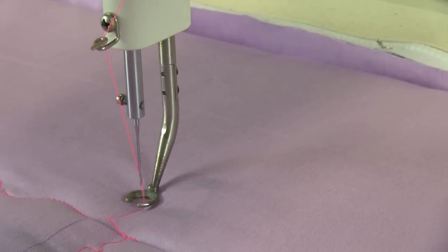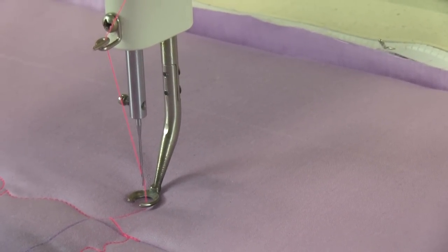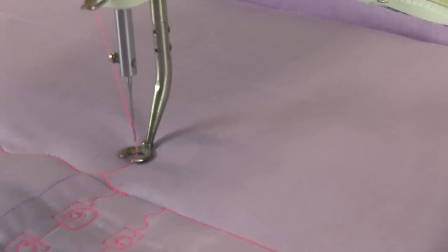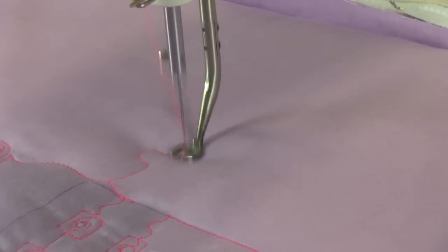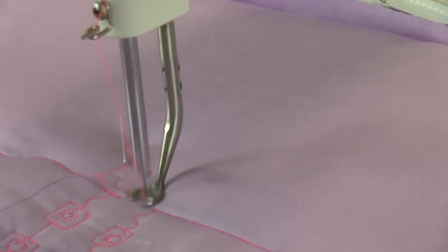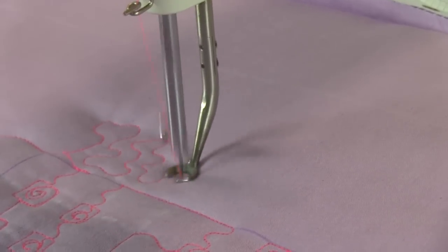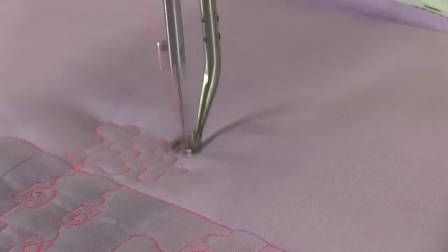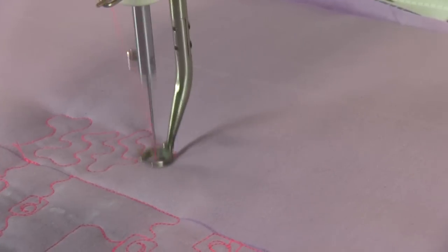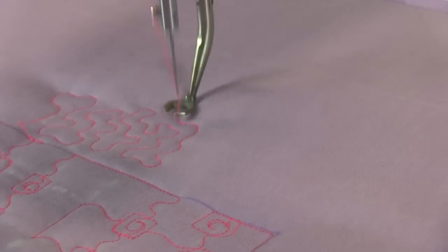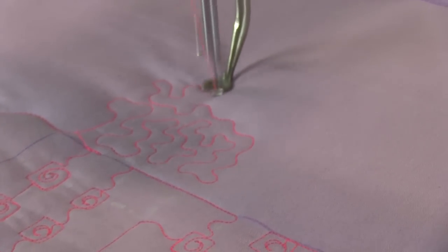Generally, one of the first designs that a free motion quilter learns is a meander or a stipple. There's really no difference between a meander and a stipple—it's just density level. Everybody calls them different things; there's some fine line where a stipple becomes a meander and vice versa. That's generally what people start with. It kind of looks like jigsaw puzzle pieces, Casper the Friendly Ghost, dog bones, that sort of thing.